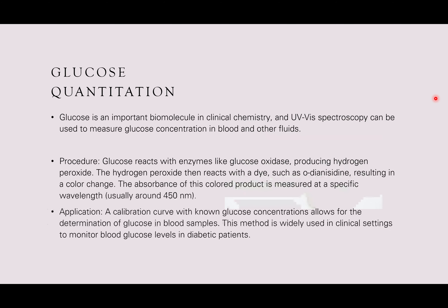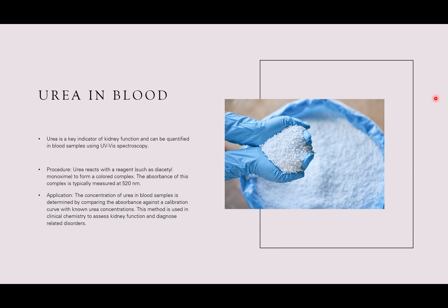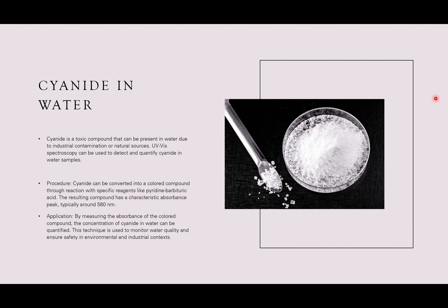The applications of UV-Vis spectroscopy: UV-Vis is widely used as an analytical technique for quantifying the concentration of substances in a solution. Molecules absorb light at specific wavelengths, and the amount of light absorbed is proportional to the concentration of the absorbing substance. We can use UV-Vis spectroscopy for the quantitation of different substances including iron in tablets, glucose, urea in blood, and cyanide in water.